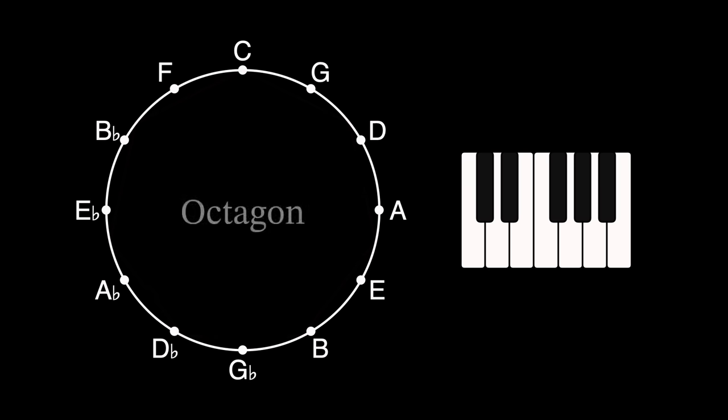An octagon plays the same diminished chords as the square but twice as fast relative to the rotation speed and in the opposite direction.